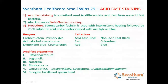Non-acid fast bacteria will appear blue with the counter stain. The organisms which are acid fast include: Mycobacterium tuberculosis, Mycobacterium leprae, Legionella, Nocardia, Rhodococcus, oocysts of Isospora belli, Cyclospora, Cryptosporidium parvum, smegma bacilli, and sperm heads. Thank you.